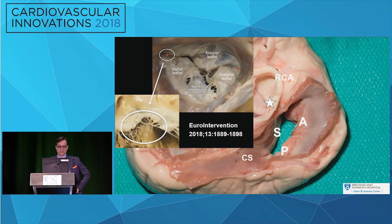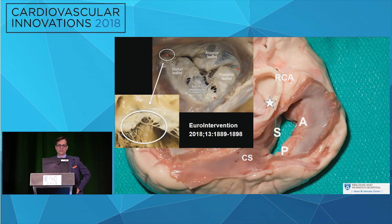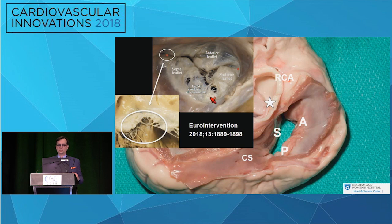The tricuspid valve is much thinner and easier to tear. The coaptation line between the septal and anterior leaflet tends to be the longest — in my experience, it's one of the lines where we place clips most consistently. Just like in the mitral valve, the chordae tend to increase in number and density as you move toward the commissures in any of these leaflets. So there's lots of space to maneuver in the middle, but much more dense chordae at the commissures, which can be an important marker when we encounter trouble with clip placement.